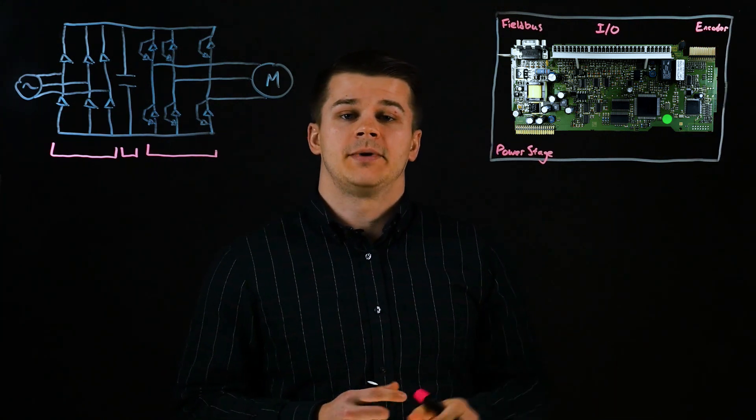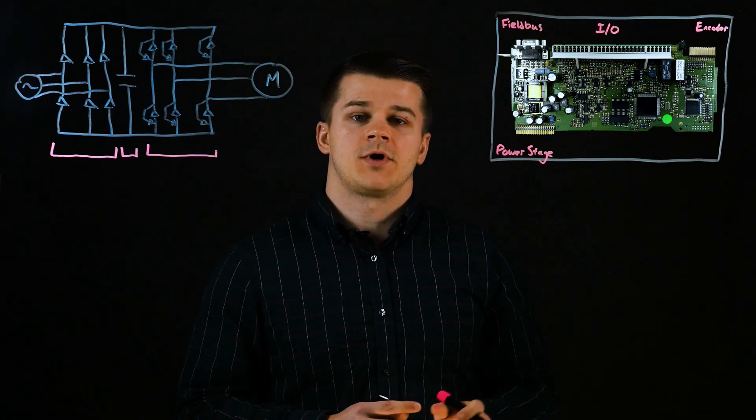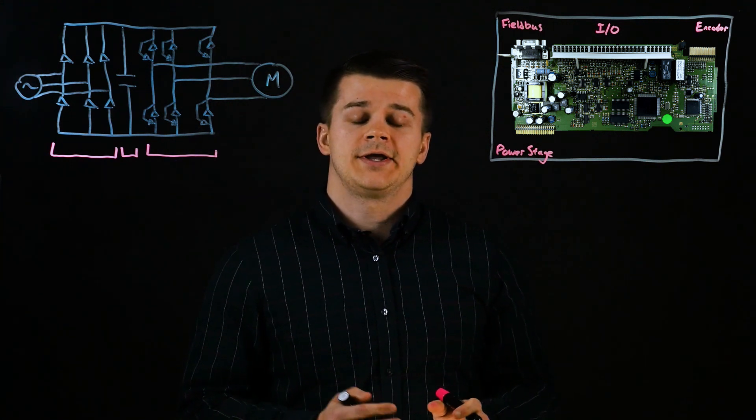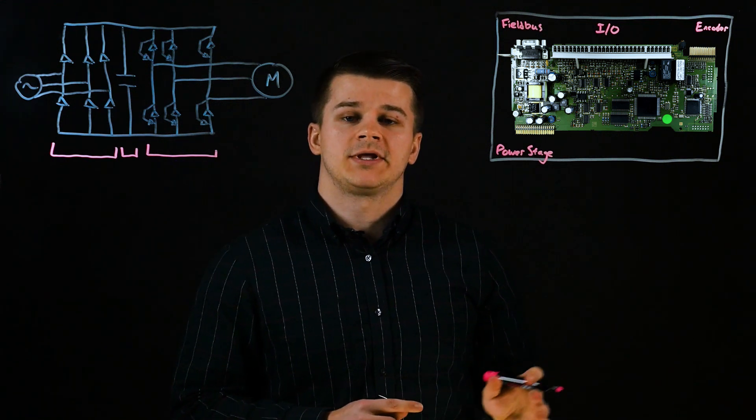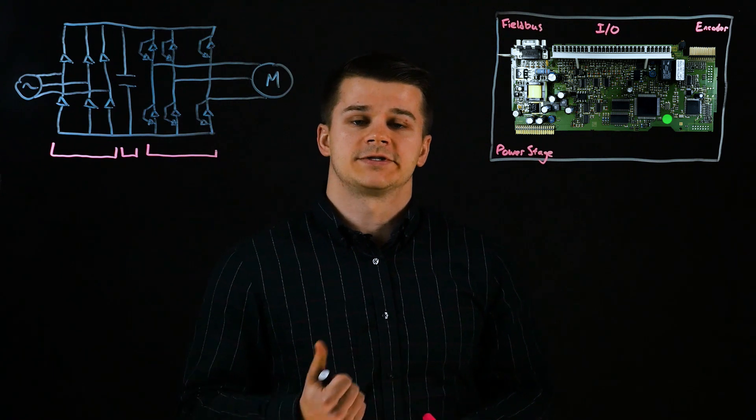And finally is the encoder feedback. This is a modular encoder board that allows the drive to run in closed loop control. We'll hit on what closed loop control is in our future videos, but on the F5 drive the modular encoder supports all major protocols such as TTL, resolver or sine cosine.